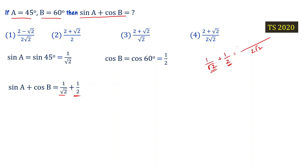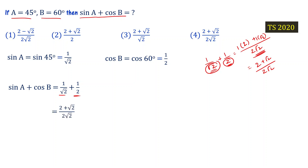So sinA plus cosB equals 1 by root 2 plus 1 by 2. Adding these with LCD 2 root 2, we get 2 plus root 2 divided by 2 root 2. So choice 4 is the answer: 2 plus root 2 divided by 2 root 2.